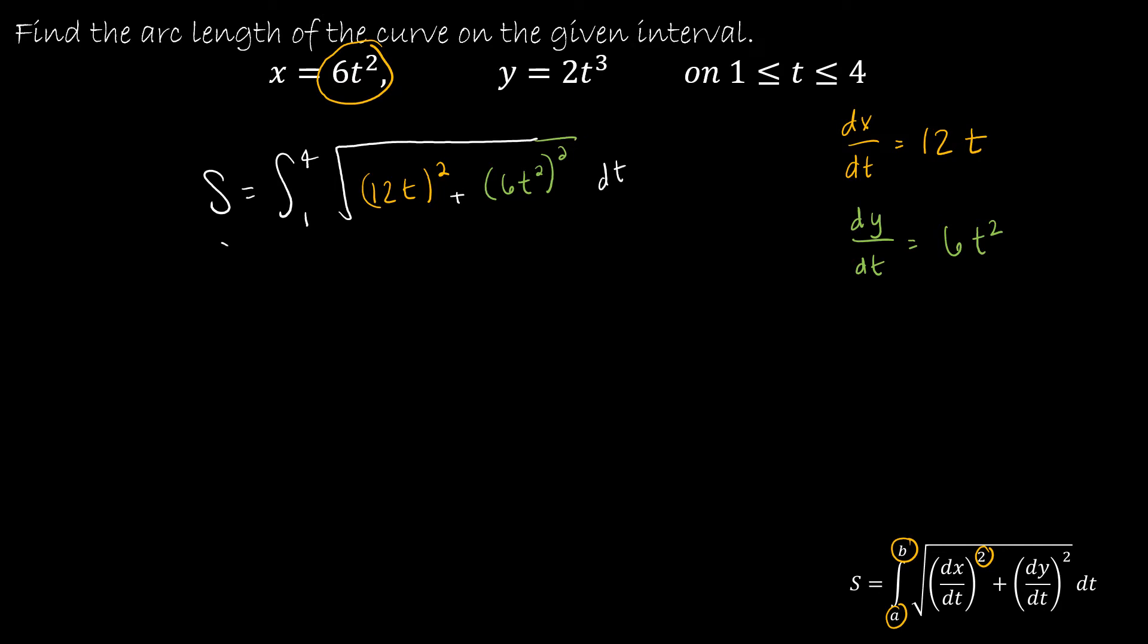So this gives me the integral from 1 to 4. Just doing some algebra, 12t quantity squared is 144t². 6t² squared would give me 36t⁴ with respect to t.